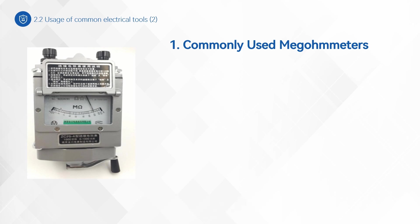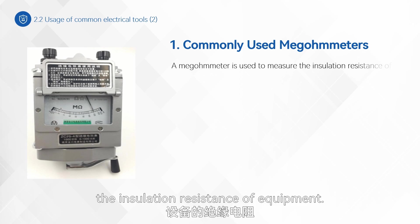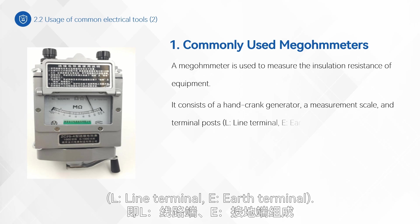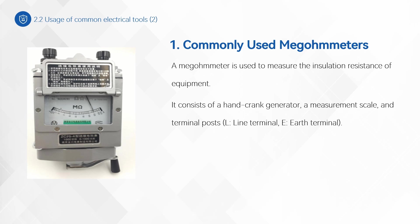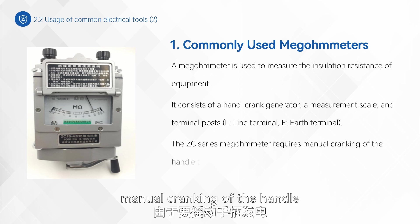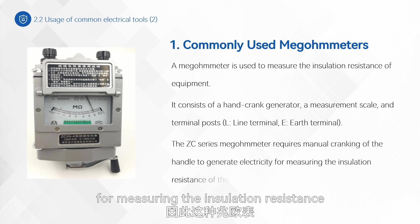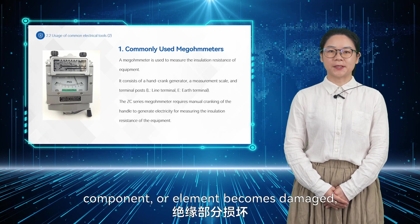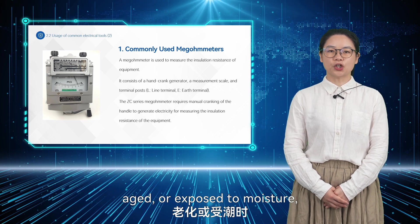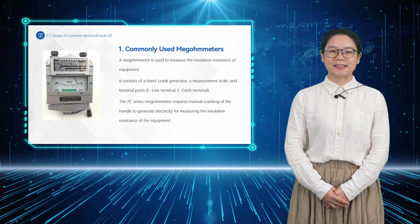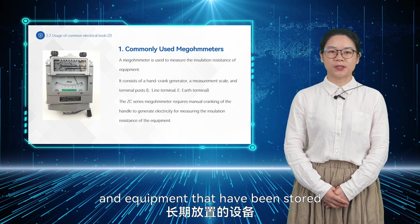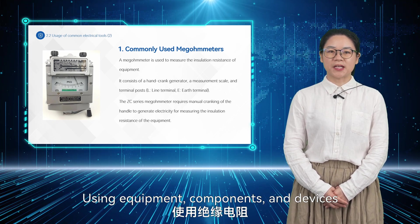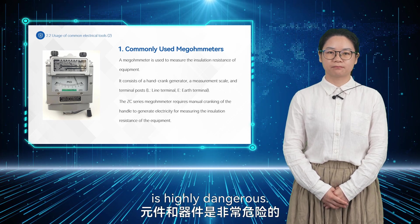A megometer is used to measure the insulation resistance of equipment. It consists of a hand crank generator, a measurement scale, and terminal posts: L (line terminal) and E (earth terminal). The ZC series megometer requires manual cranking of the handle to generate electricity. When the insulation portion of a device, component, or element becomes damaged, aged, or exposed to moisture, the insulation resistance value will decrease. Newly acquired equipment and equipment stored for an extended period should have their insulation resistance measured before use. Using equipment with inadequate insulation resistance is highly dangerous.